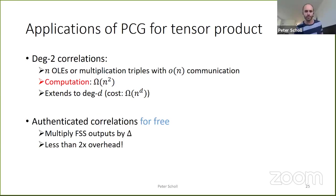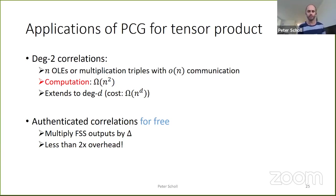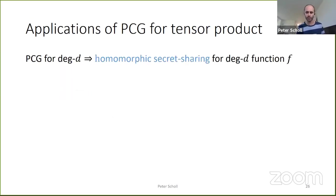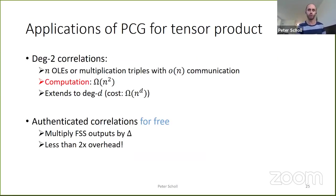We can modify this to get authenticated correlations. An authenticated triple requires one extra multiplication by a secret MAC key delta. Instead of a generic degree-three construction, we simply multiply each FSS output point by this fixed delta in the setup phase — a scalar multiplication that preserves sparsity exactly. This gives the extra shares used for MACs of multiplication triples or authenticated OLEs, with less than two times overhead over the basic PCG for OLE or multiplication triples. This is a very neat trick for getting active security at low cost compared with semi-honest security.